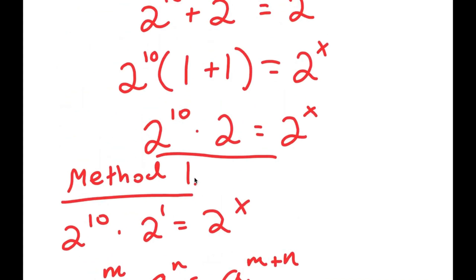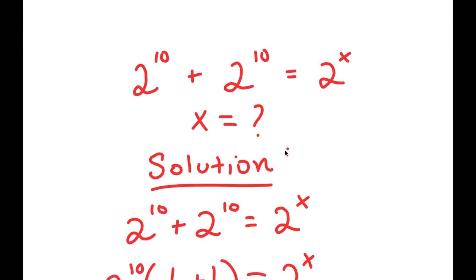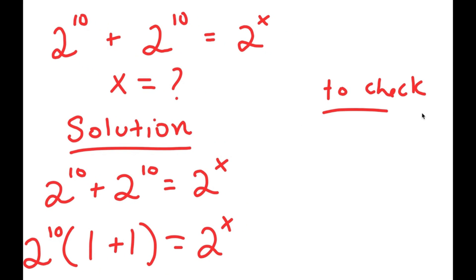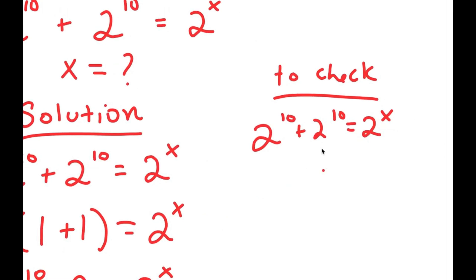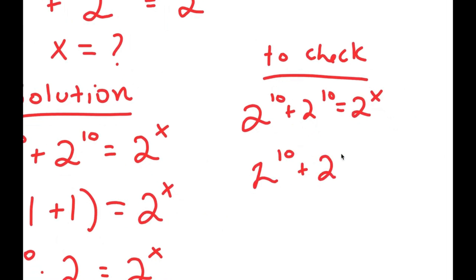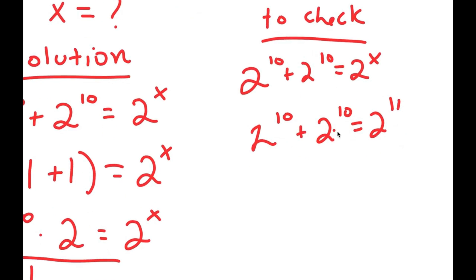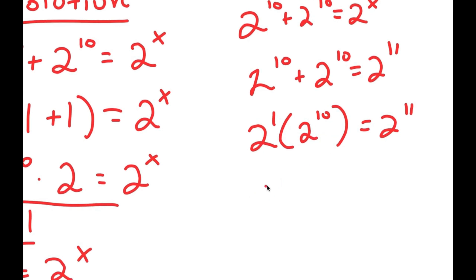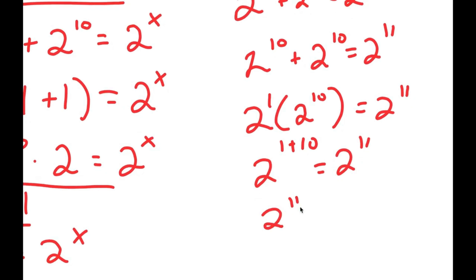We always need to check our answer. Our equation was 2 to the 10 plus 2 to the 10 equals 2 to the x, and we got x equals 11. Substituting: 2 to the 10 plus 2 to the 10 equals 2 to the 11. The left side is 2 times 2 to the 10, which equals 2 to the 1 times 2 to the 10, equals 2 to the 1 plus 10, which is 2 to the 11. This confirms x equals 11.